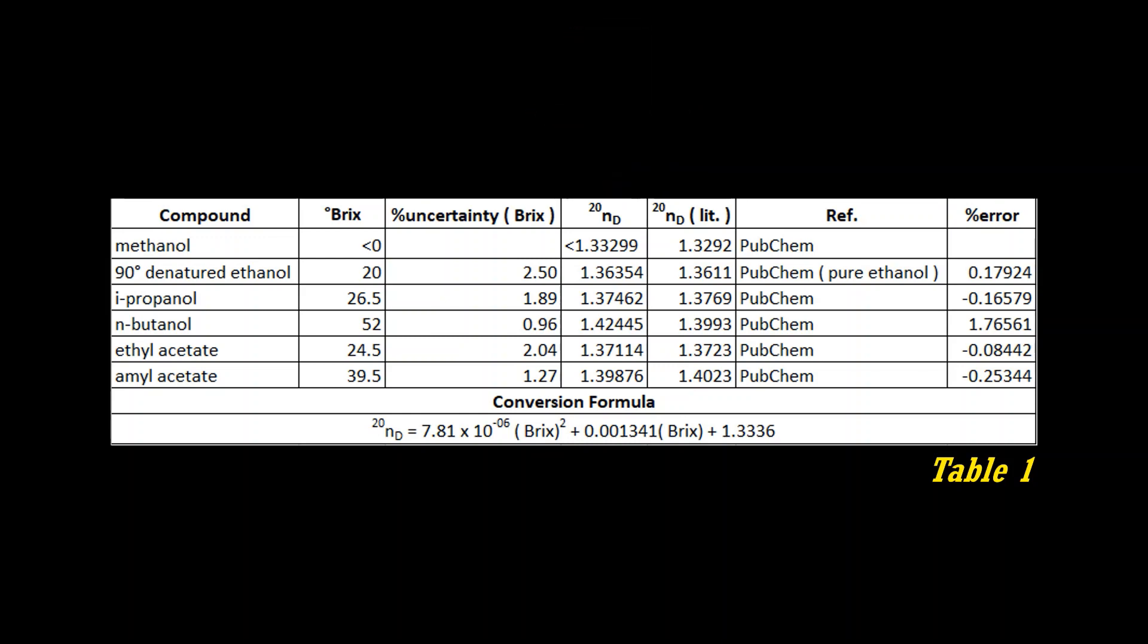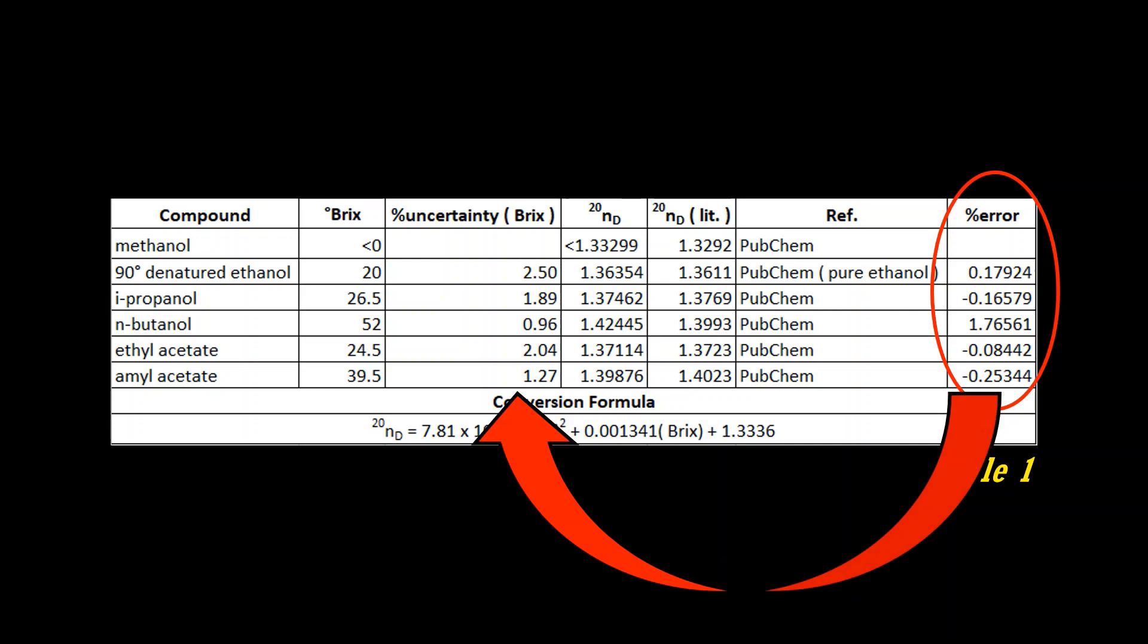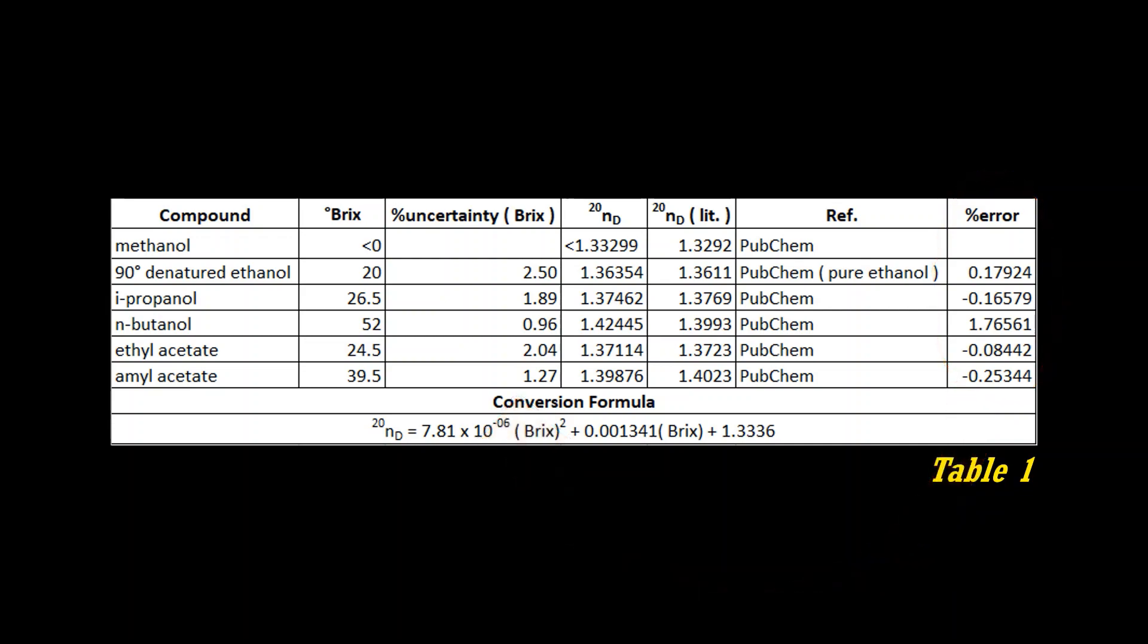Error percentage is calculated from the two refractive index values. We see the error fits within the uncertainty of our instrument. It means results are acceptable.